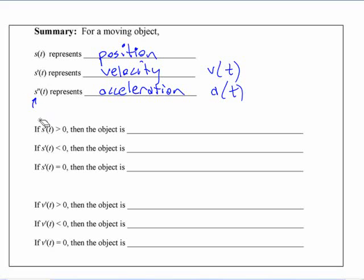You could call it A of t. And if you really wanted, we're getting ahead of ourselves here, but s triple prime. Jerk. The rate of change of acceleration is the jerk.